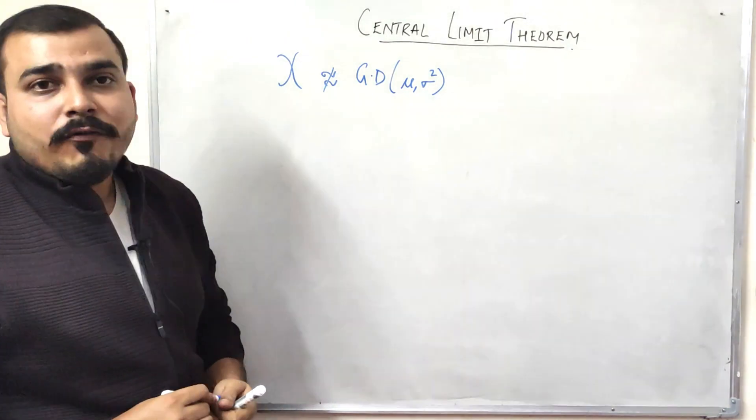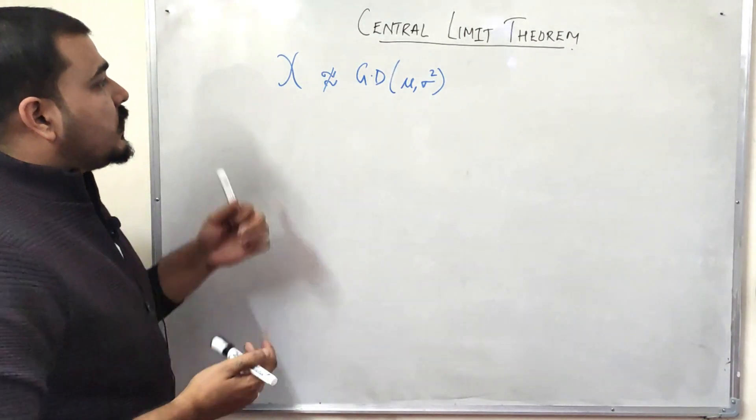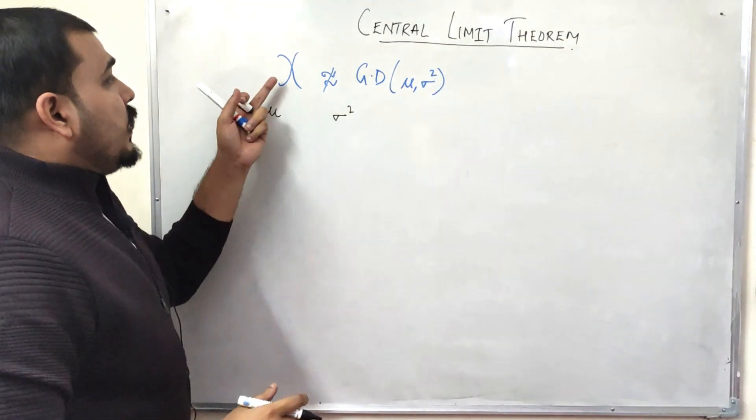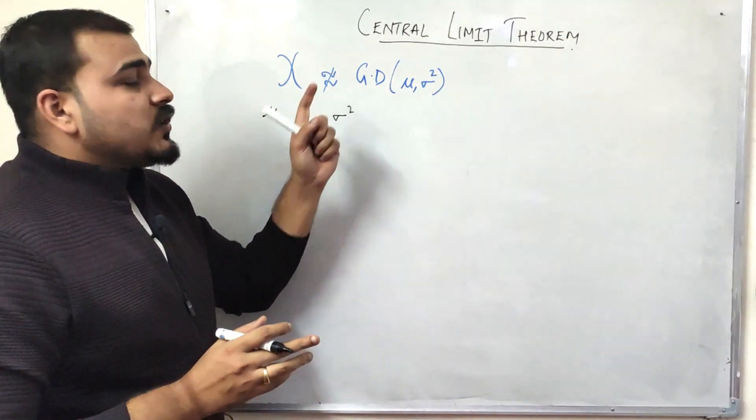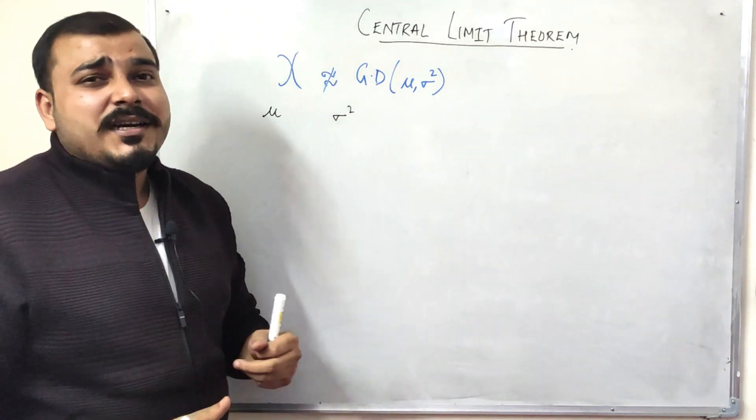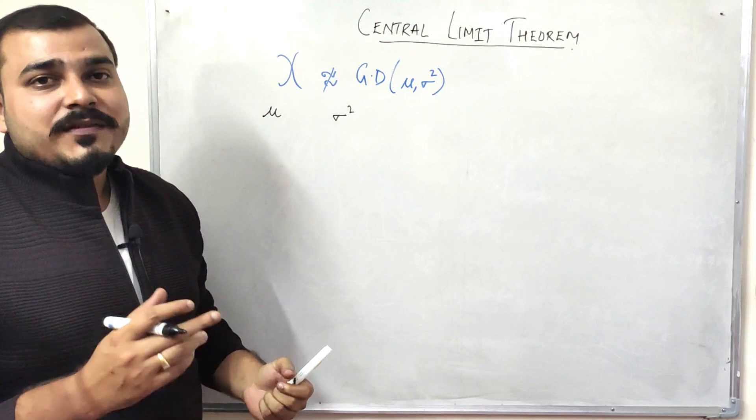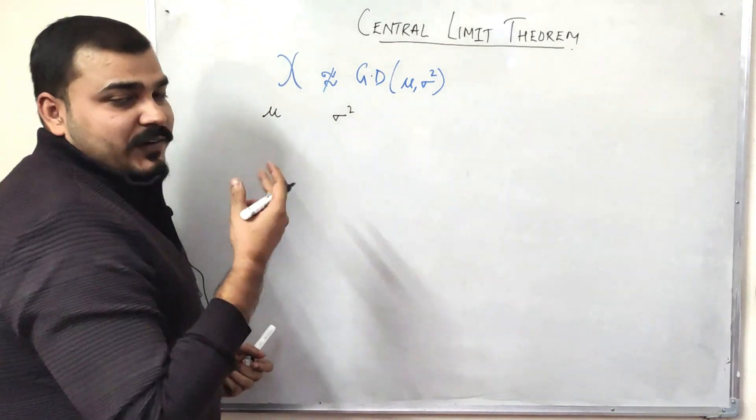One important thing to note is that I know my mean and variance value, and I'm not strictly saying that this belongs to any Gaussian distribution—it belongs to any distribution. So what will happen is that Central Limit Theorem specifies two different points.